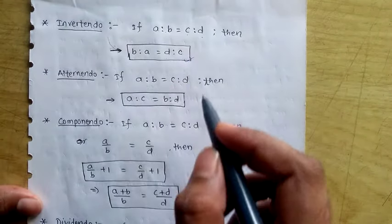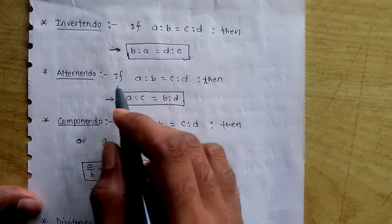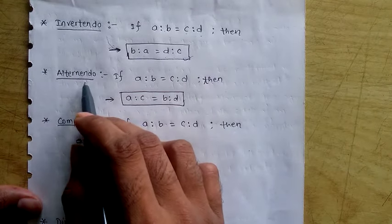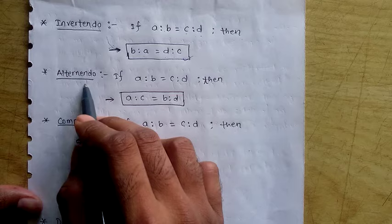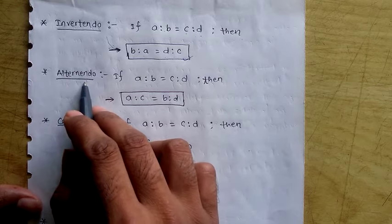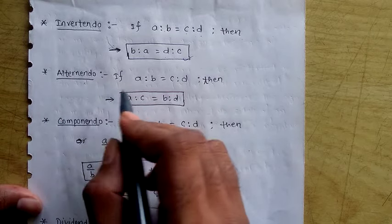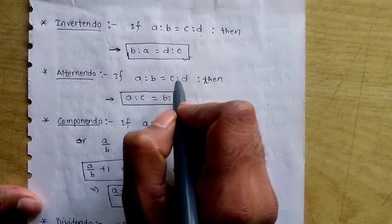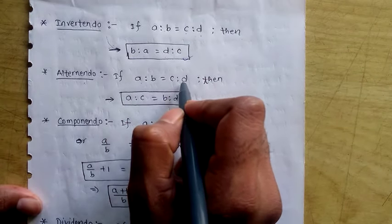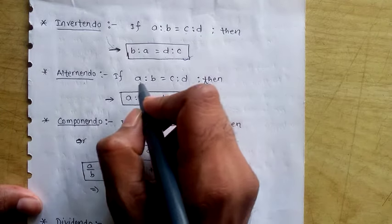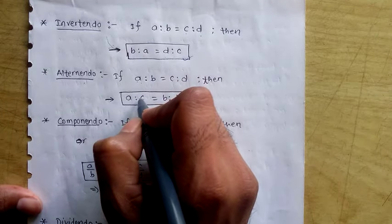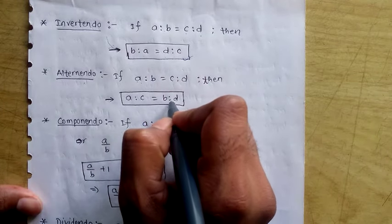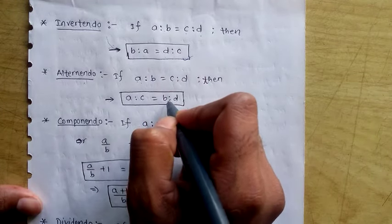The next property is Alternendo. If a is to b equals to c is to d, then a is to c equals to b is to d. That is the concept of the Alternendo property.